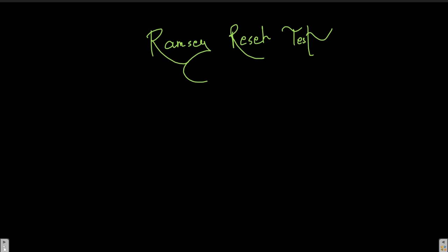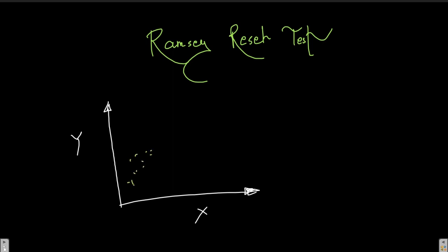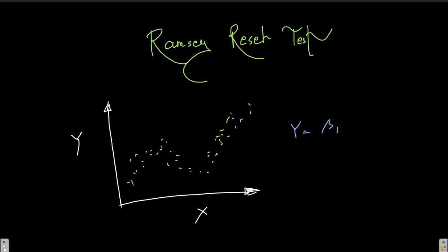Let me conceptually explain what problems may happen when we have some omitted variable. Consider a plot where y is on one axis and x on the other. The actual distribution of x and y is non-linear, but I end up fitting a simple linear model: y = beta1 + beta2*x + u.